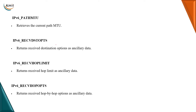IPv6 path MTU option retrieves the current path MTU — that is, the current value of MTU. IPv6 receive destination options returns the received destination option as ancillary data, which is additional data.